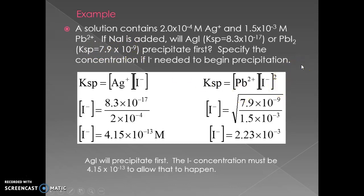So how are we going to figure it out? We need to do some calculations to figure out how much I minus we actually need. We've got the Ksp values, we've got the other ion concentration, so all we need to do is figure out what the I minus concentration is going to be.